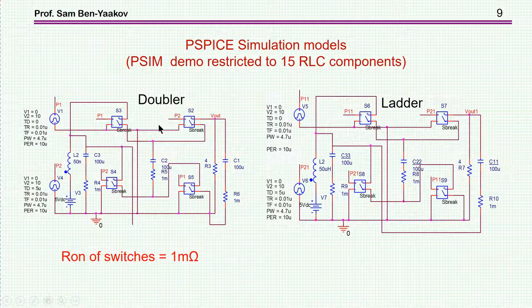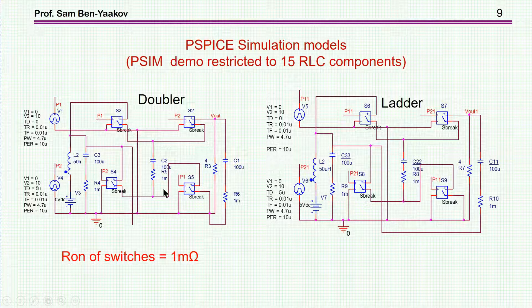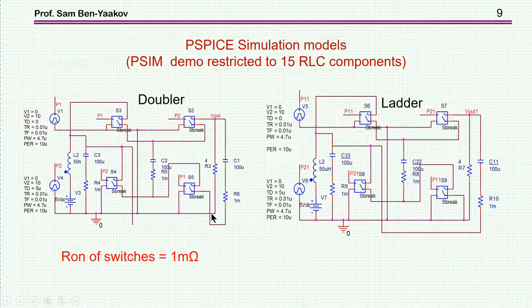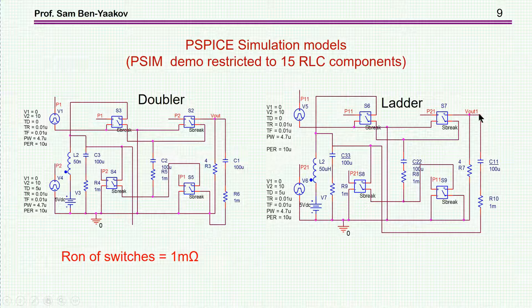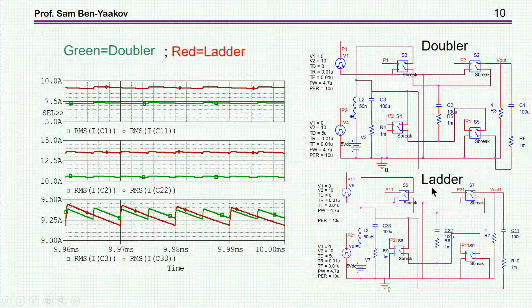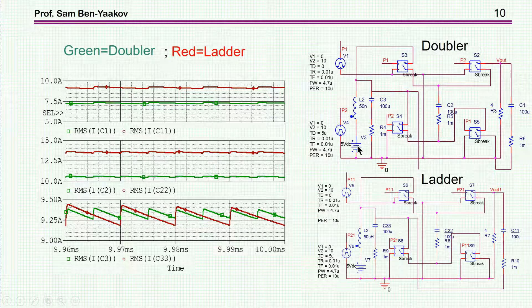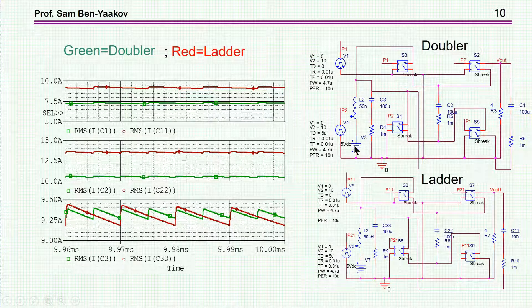So, in this case, again, I'm comparing the doubler to the ladder, and here are the four switches. These are just the generators which are operating these ideal switches. Each one of these switches has a 1 milliohm on resistance when it's on, and here is the ladder, and the difference, of course, is that in this case the output capacitor is at the output, while this filter capacitor now is connected between the output and the input. So, this is the ladder and this is the doubler, and if I compare now these two configurations for the case in which there is a 50 nanohenry, between the actual ideal voltage source, 5 volt, and the converter.